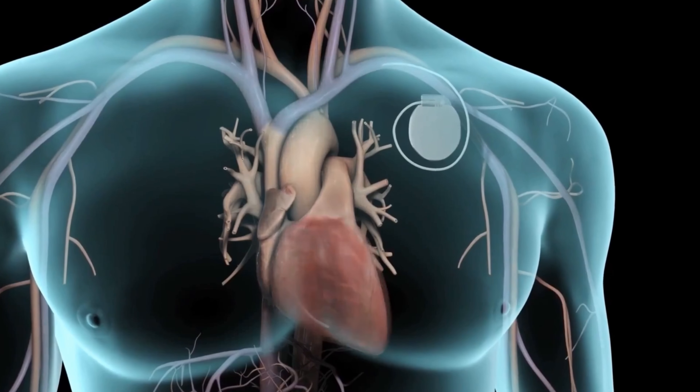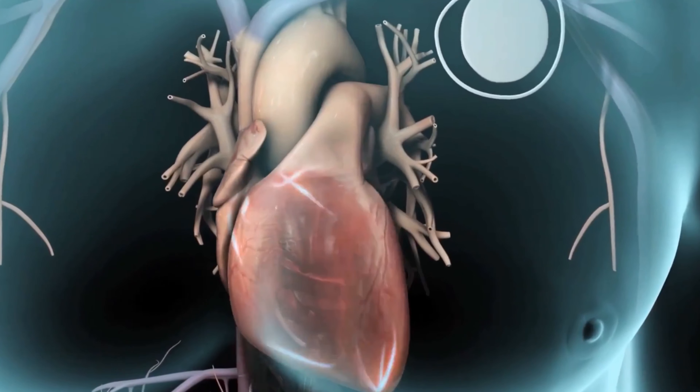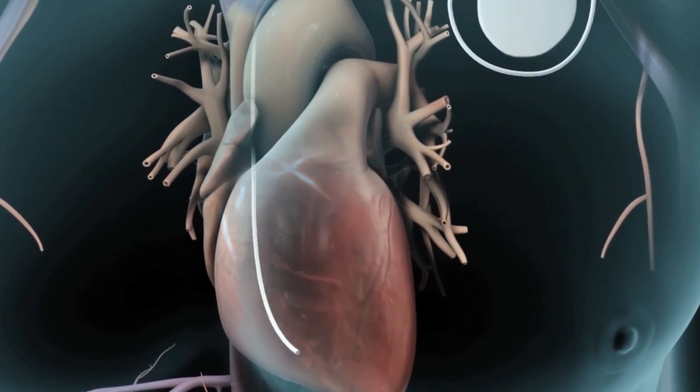We've done a video separately on pacemakers, so I urge you to have a look at that for further information. The bundle branch block is a common condition — often you're probably born with it and it means nothing significant — but in certain situations, particularly the left bundle of fibres not functioning properly, we do need to look at further tests to work out what potentially could be causing this.